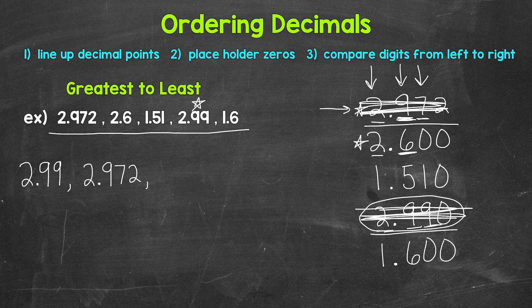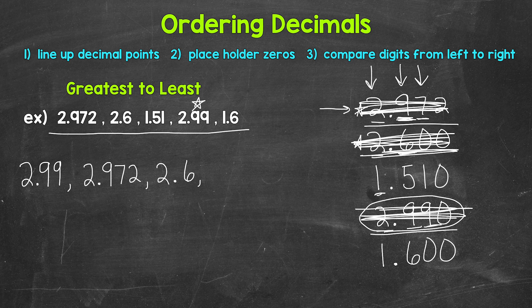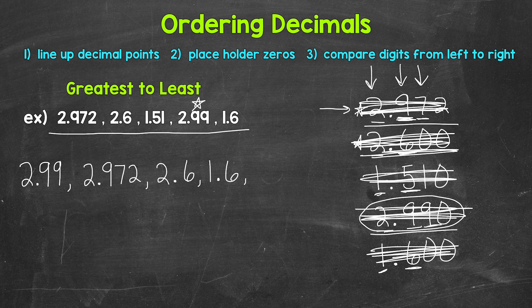Now let's continue on. Looking at the ones place, we have a 2, a 1, and a 1. 2 is the greatest here, so 2 and 6 tenths comes next. Then looking at the ones place for what remains, we have a 1 and a 1, so we move to the tenths place — we have a 5 and a 6. 6 is greater than 5, so 1 and 6 tenths comes next. And we only have one left now: 1 and 51 hundredths, which is last.